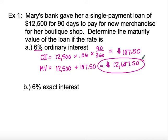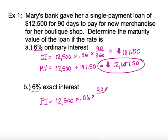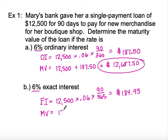Now if we use that same information but the exact interest method, we're still looking at 6%. We'll change one number: replace 360 with 365. You'll see it's not extremely different, but it does save a few dollars. That gives us $184.93 in interest, and the maturity value of her loan will be $12,684.93. She saves a few dollars using exact interest because we're dividing by a higher number.